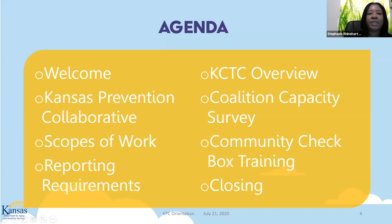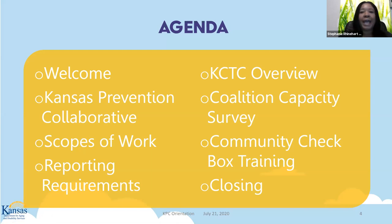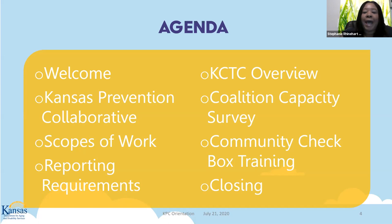This is our agenda for today. We started with the welcome, and we'll go into talking about our Kansas Prevention Collaborative, then scopes of work, reporting requirements, KCTC overview, coalition capacity survey, community checkbox training, and then we'll close. As Chad mentioned, we'll have breaks in between. We are recording, and if you have any questions along the way, please enter them in the chat box and someone will be able to answer.